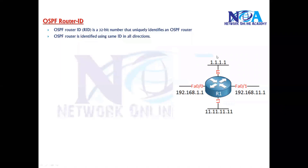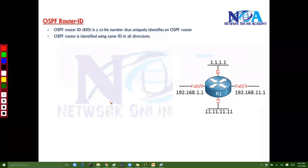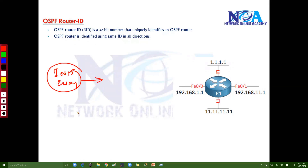The next thing we'll talk about is the OSPF Router ID. Before we go ahead with the later-on process, previously we have seen the initialized stage and the two-way stage, where routers establish the neighbor relationship before they start exchanging the database. But before we move on to the exchange state, we also need to understand something called Router ID.